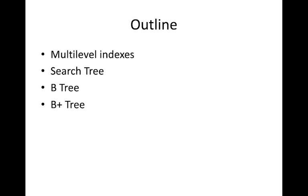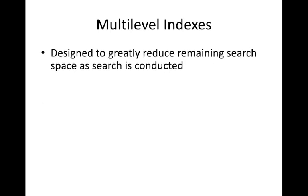Multi-level indexing is designed to greatly reduce the remaining search space as search is conducted. In primary indexing we keep an index file that is ordered. If I want to search an element, I perform binary search on the index file to get the element, then search the data file.